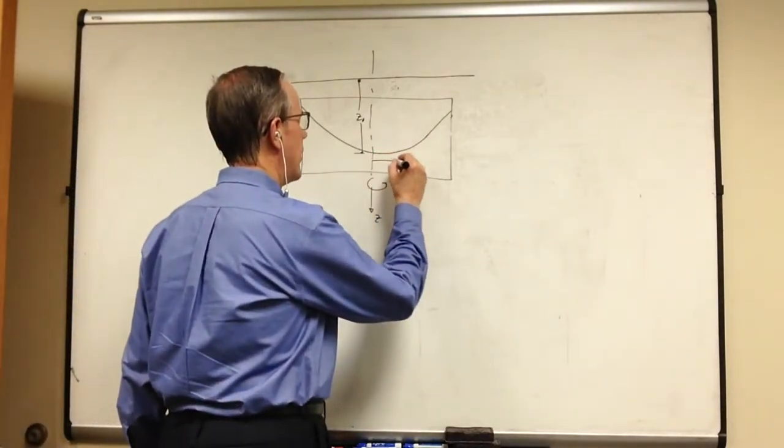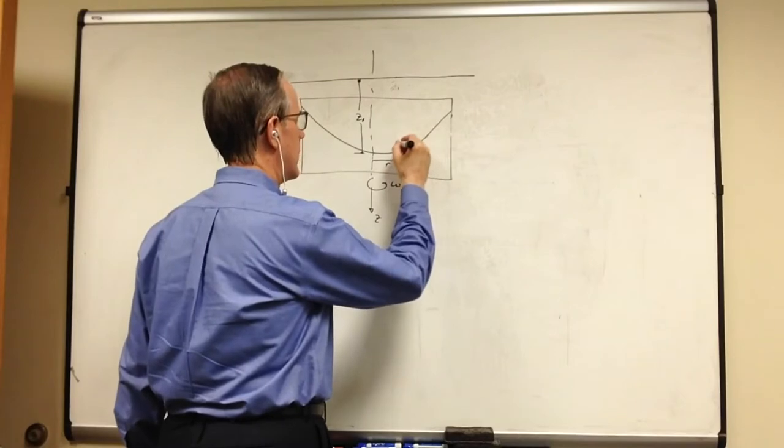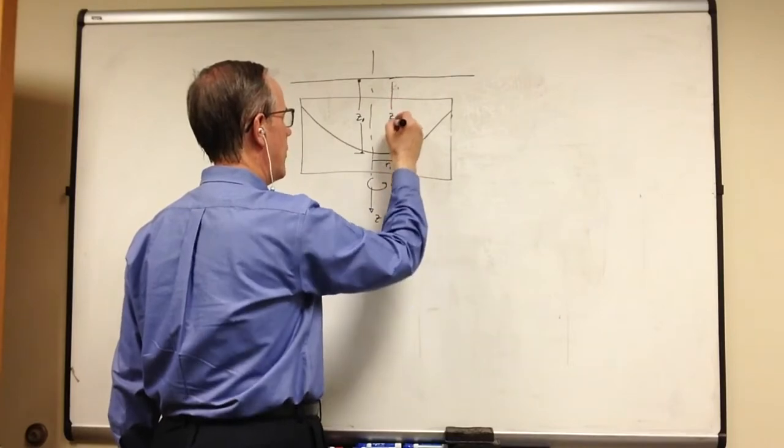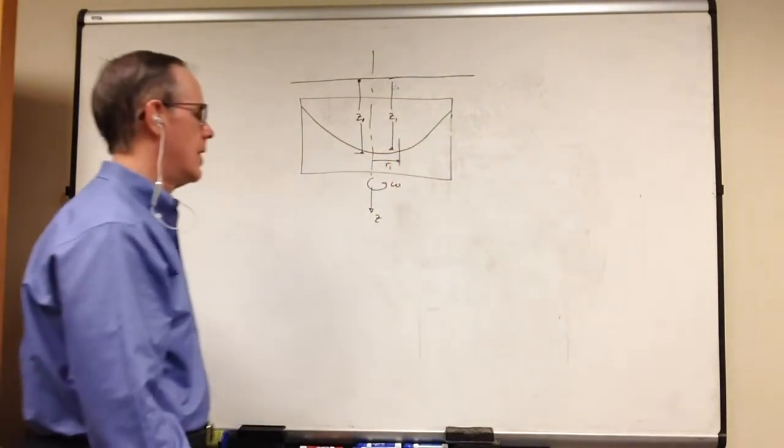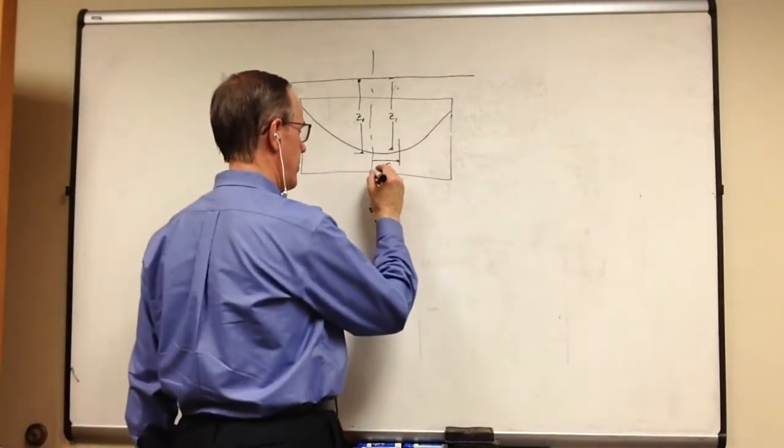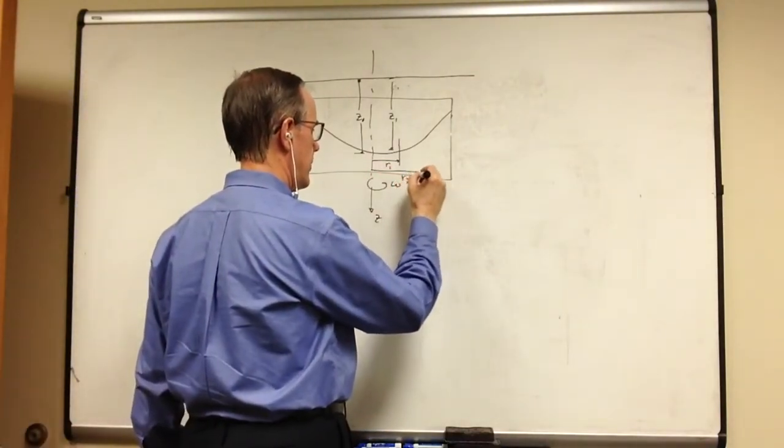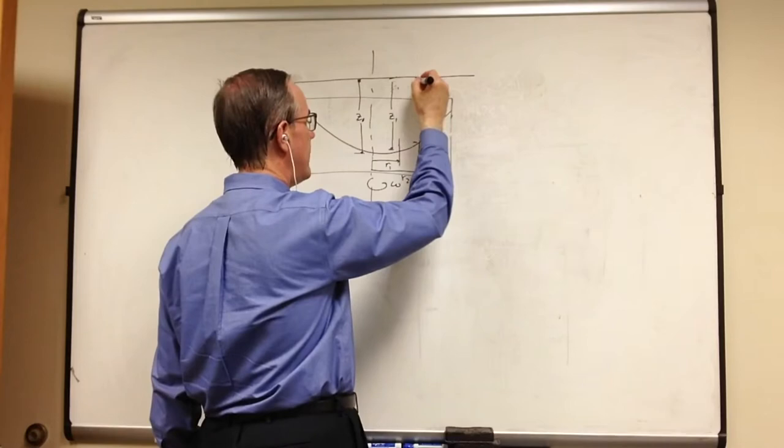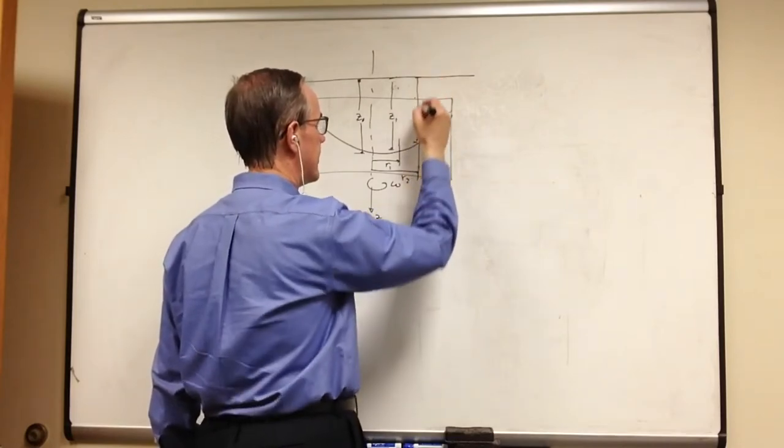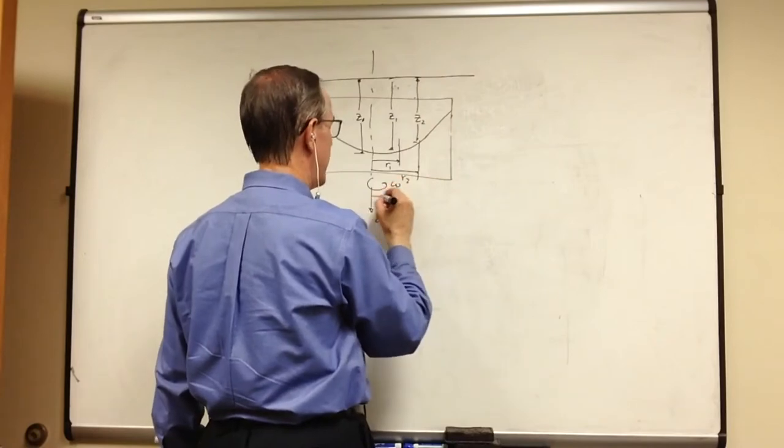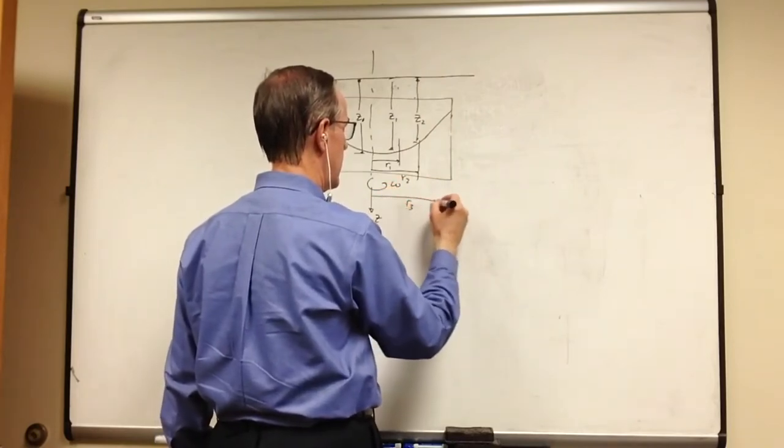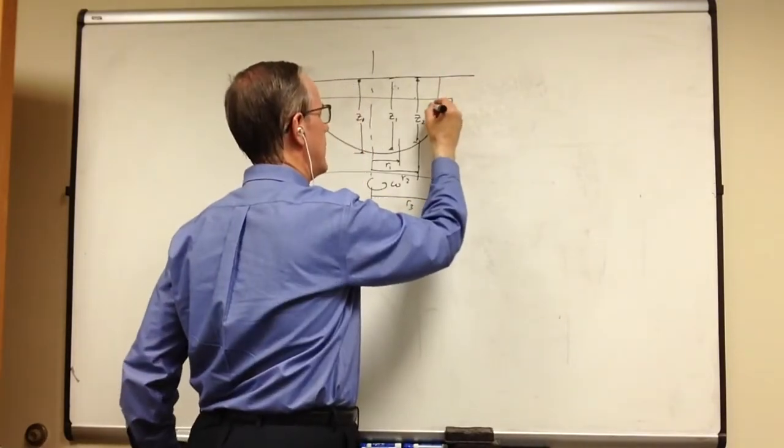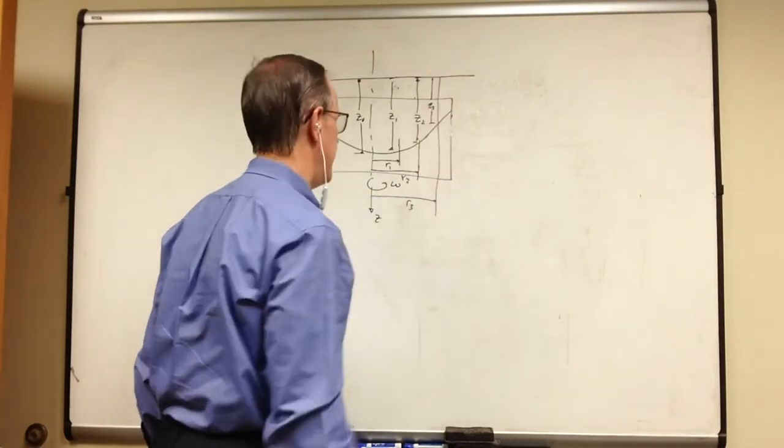Datum at the top. Let's suppose that the steady state, this is the z-axis, and this is z-naught, the distance between the very bottom of the bowl, the center line, and here. Now let's take arbitrary points R1, R2, with distances z1, z2, z3.